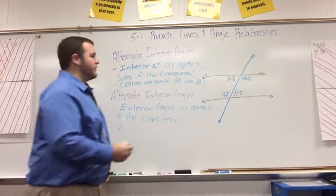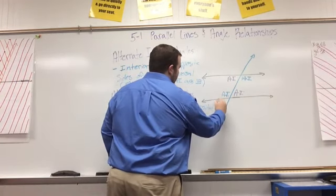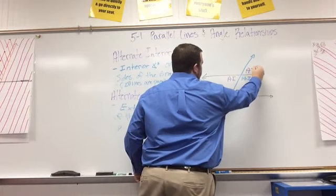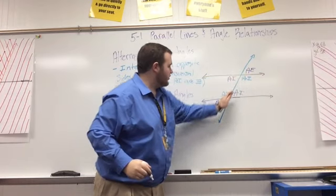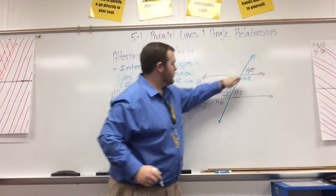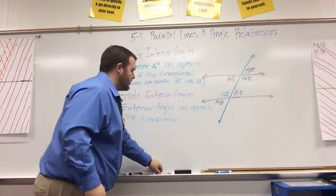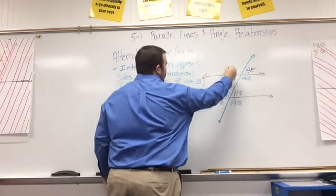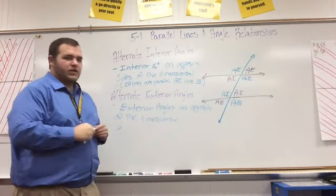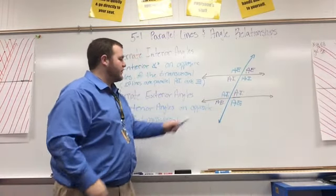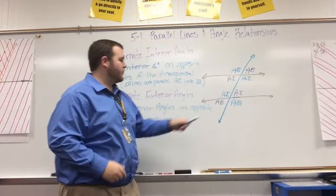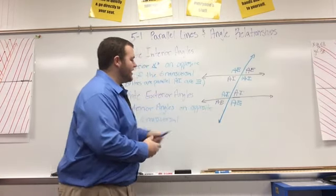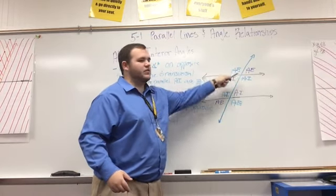I'll label the pairs of alternate exterior angles with AE. Here's one alternate exterior angle, and the one that corresponds with it is all the way on the other side — opposite sides of the blue line and opposite sides of the parallel lines. Then I'll label the second pair. If you're not using different colors, make sure to note them as AE1 and AE1, AE2 and AE2, so you don't get confused.